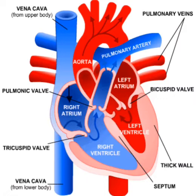That oxygenated blood then enters the left atrium through the pulmonary veins. In the picture you can see that pulmonary veins carry blood from the lungs to the left atrium. Again, from the left atrium, blood enters the left ventricle. Here also a valve is present which closes immediately as blood passes from the atrium to the ventricle, to prevent the backflow of blood.